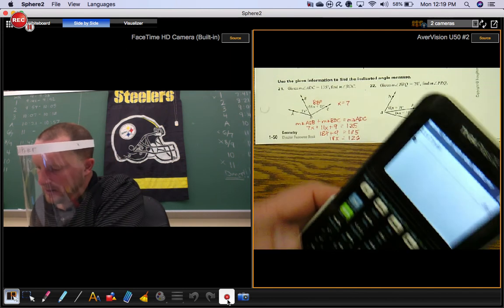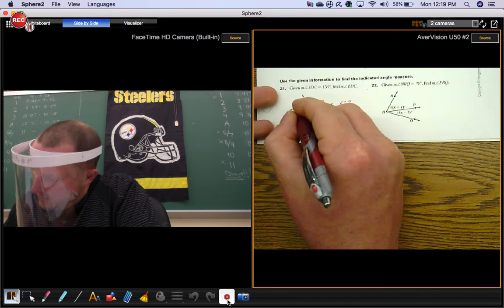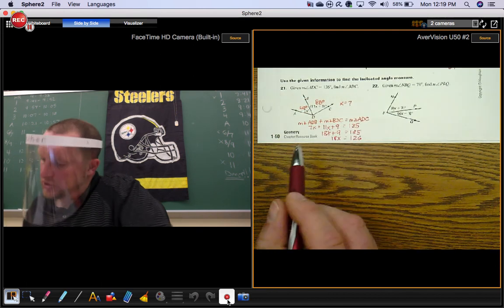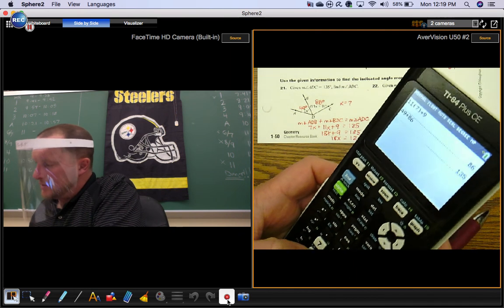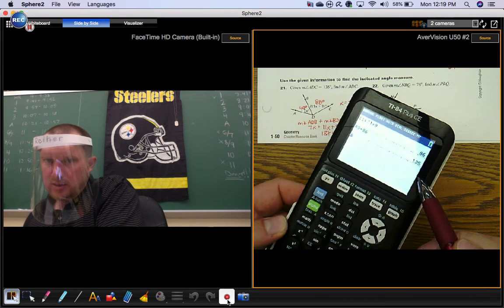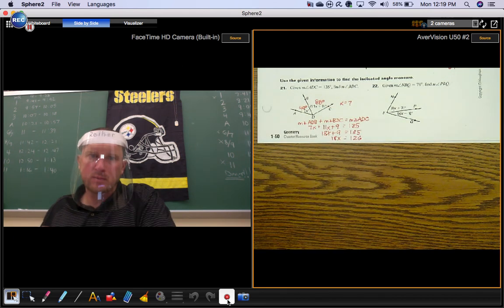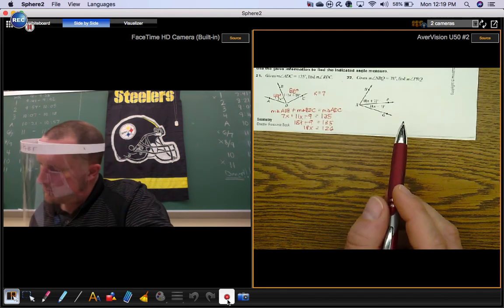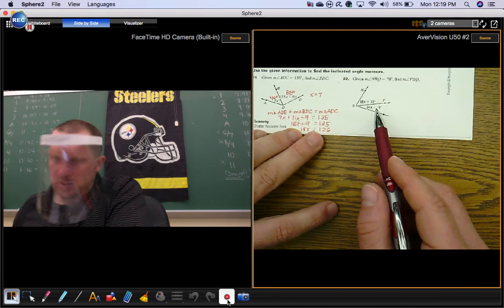Now that's all they ask you to find, but you're really better off plugging x in over here as well so you can double check to see if you're right. You have a 49 degree angle and an 86 degree angle. How do you know that you're right? It adds up to the same 135.